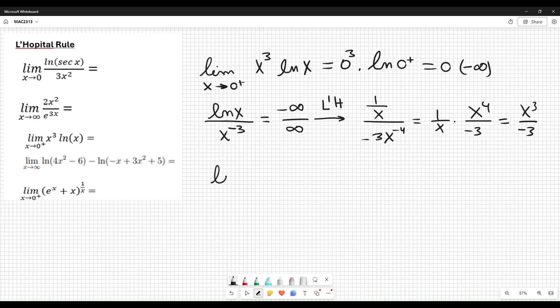x cubed over minus 3. Now finally, limit when x approaches to 0 plus, x cubed over minus 3. Minus 3 is a constant, put outside. And the limit when x approaches to 0 plus of x cubed is 0. Times 0 cubed gives 0.